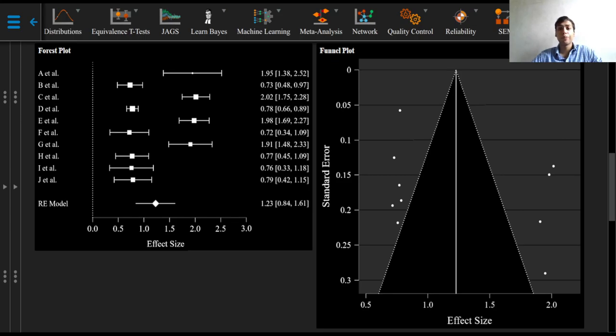In a forest plot, the effect sizes found for each study are marked with a square mark along the x-axis, one study below the other. The size of the marks is proportional to the weight the study has in determining the combined effect size estimate.